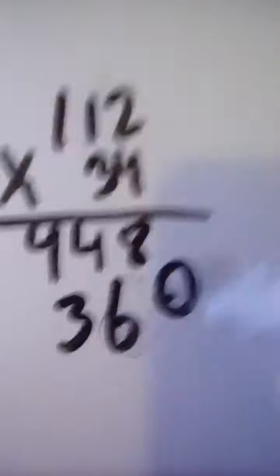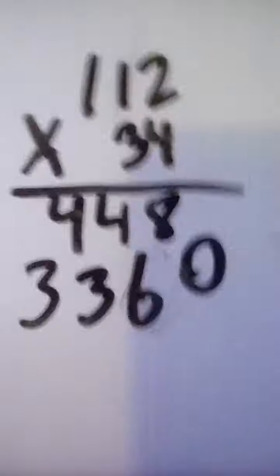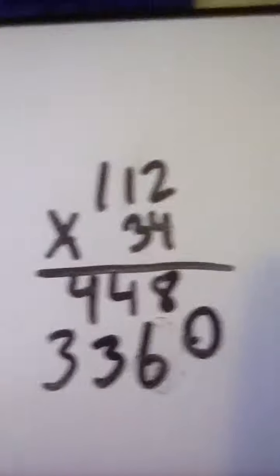Then 3 times 1 is 3, and 3 times 1 again is 3. Okay, now we have to add these numbers.